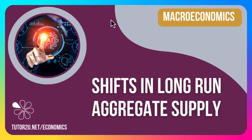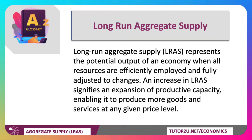Welcome to a short video looking at some of the causes of shifts in long-run aggregate supply. Long-run aggregate supply represents the potential output of an economy, where all resources are efficiently employed and fully adjusted to changes.